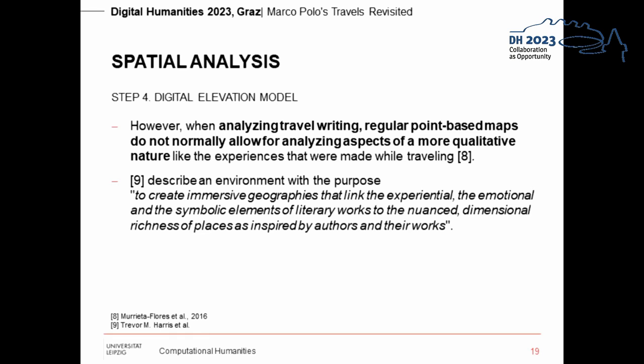However, when analyzing travel writing, regular point-based maps do not normally allow for analyzing aspects of a more qualitative nature, like the experiences made while traveling. Harris therefore described an alternative environment with the purpose to create immersive geographies that link the experiential, the emotional, and the symbolic elements of literary works to the nuanced dimensional richness of places. In our work, we contribute such an environment by providing a 3D map representation of the landscape elevation for different parts of the route.